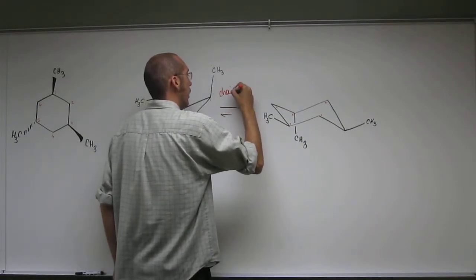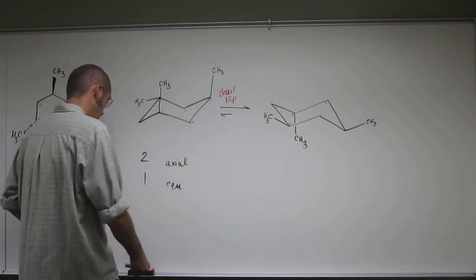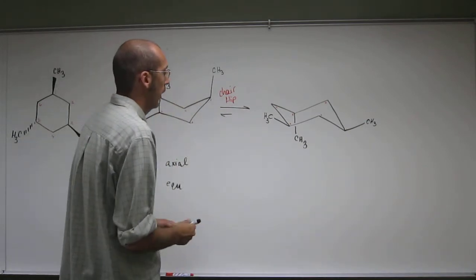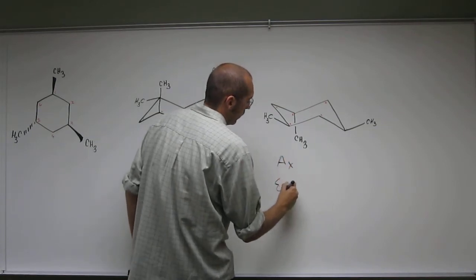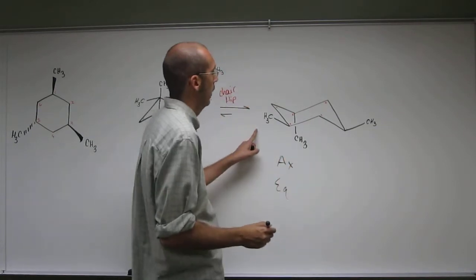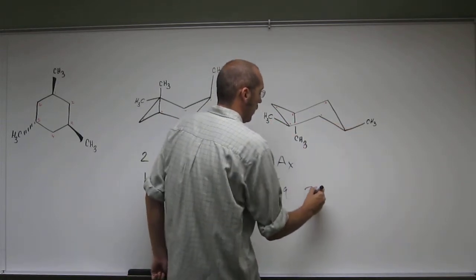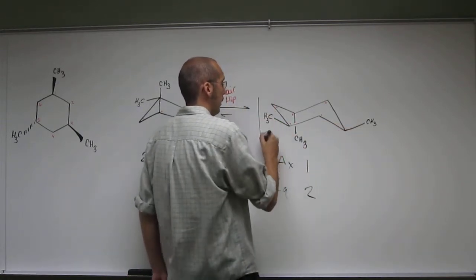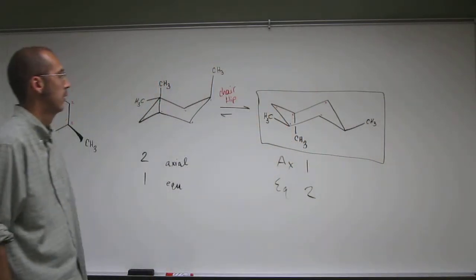This is the chair or ring flip. And then if we did axial to equatorial here, so how many equatorials? One, two. How many axials? One. So this one is the more stable structure.